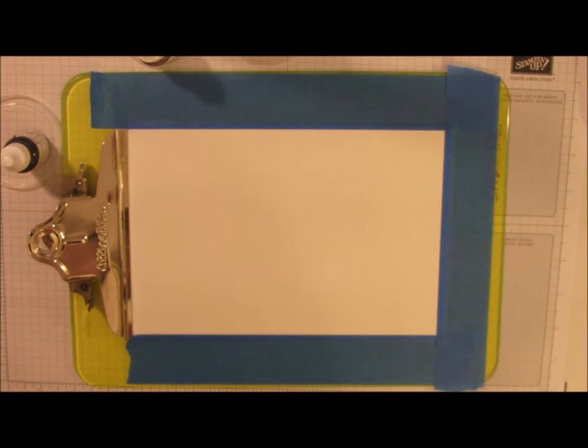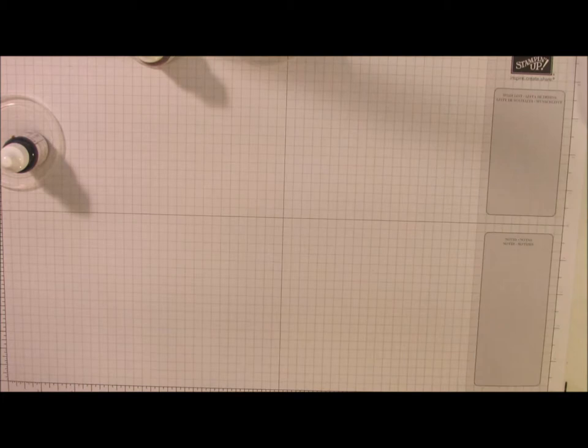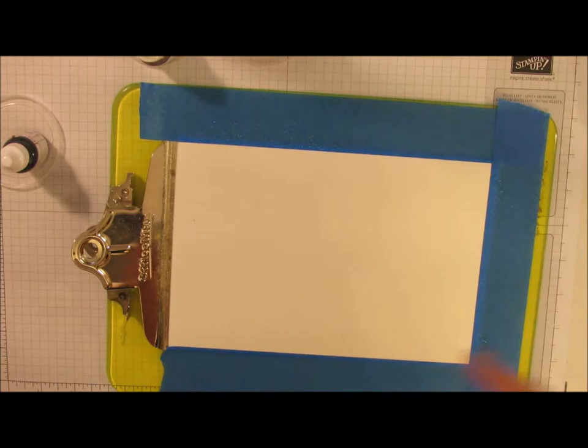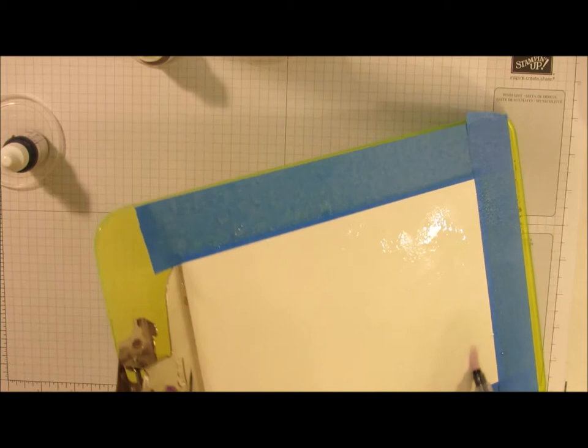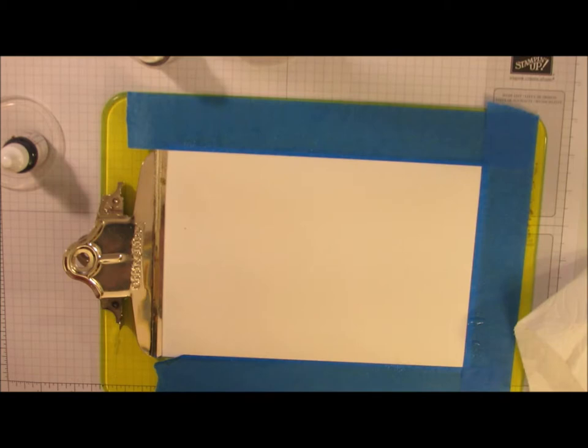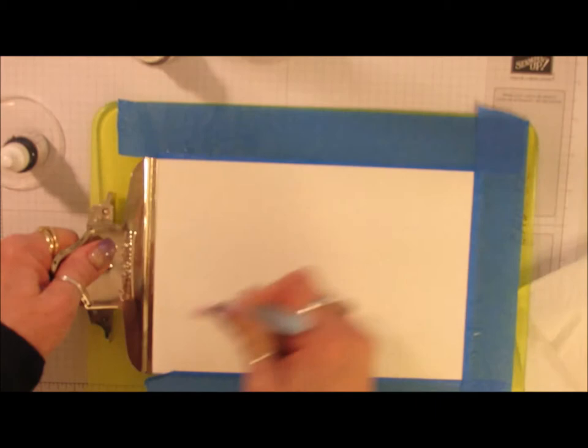First thing you're going to do is you're going to take your Stampin' spritzer and you are going to spritz this watercolor paper so that it's nice and wet. I'm going to hold it up to do it and I'm going to come over here to the side so I don't get my entire work surface wet. I got it nice and wet - it's practically drenched. Then I'm going to take one of my blender pens and I'm just going to move that water around and make sure it is totally covered.